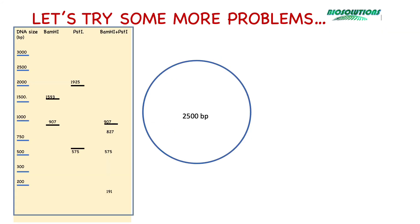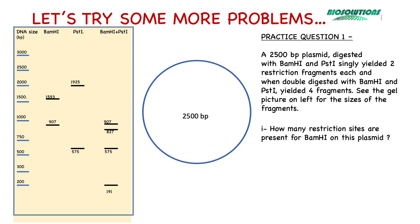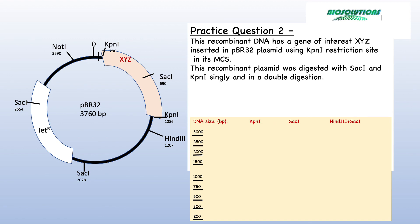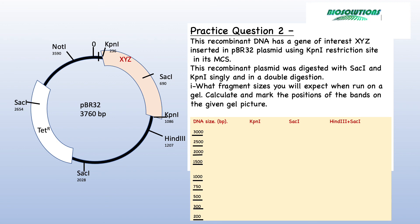In practice question 1, you see a gel picture on the left which shows bands from the restriction digestion of a 2,500 base pair plasmid with BAMHI and PST1 from single or double digestion. Using this data, place the restriction sites for BAMHI and PST1 on this plasmid to create a restriction map, and tell how many restriction sites are present for each enzyme. In a second practice question, the restriction map of pBR322 of 3,760 base pairs is given, in which a gene of interest XYZ has been cloned using KPN1 restriction sites. Study the map and calculate the restriction fragment band sizes on a gel, and also calculate the size of the gene of interest XYZ in base pairs.